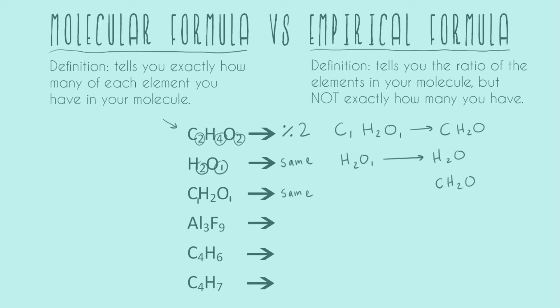So now we have AL3F9. So looking at this, we can see that our subscripts are 3 and 9, and both of these are divisible by 3. So when we do that, we're going to still have our same elements, AL and F, but aluminum becomes 1, and 9 gets divided by 3 to become 3. So our final answer just looks like this.